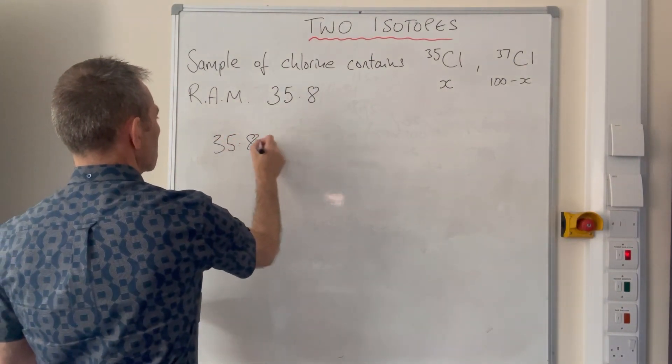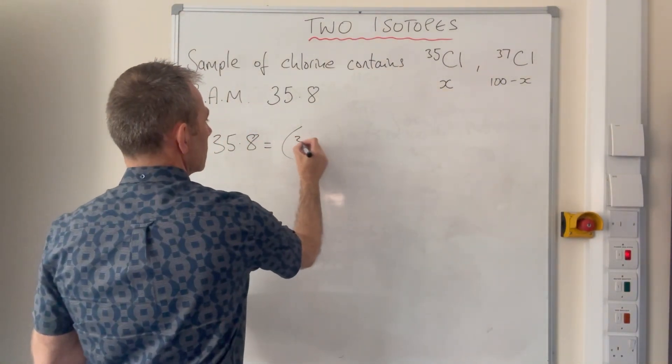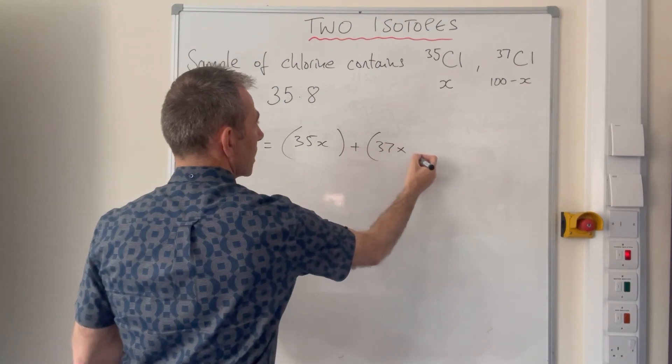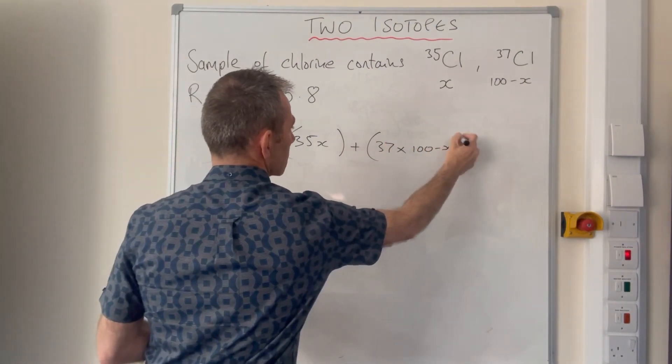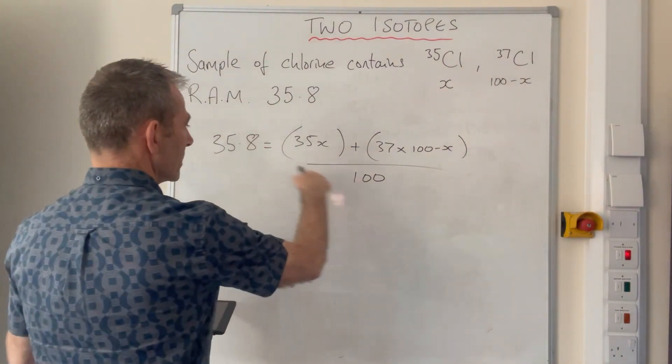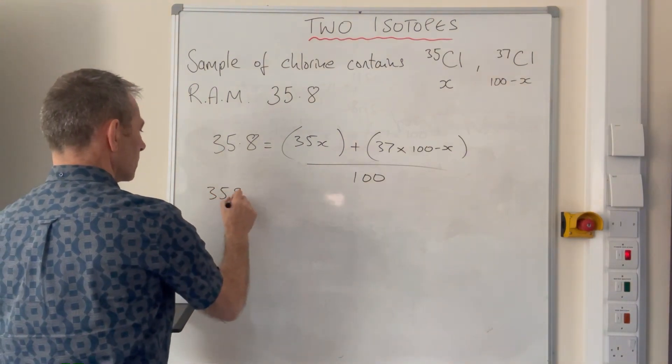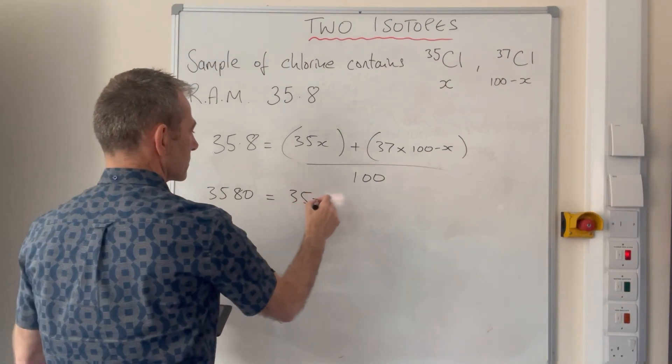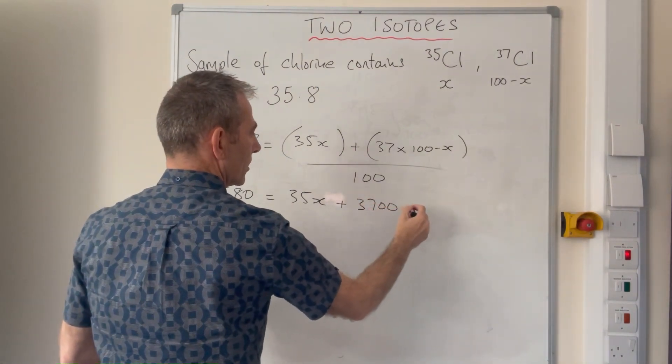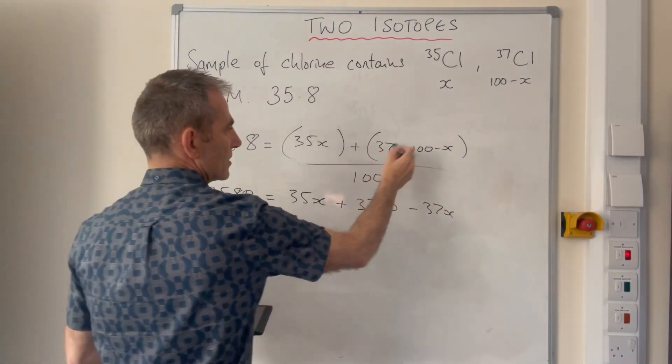Now we've established that, we'll put it into the regular formula for calculating relative atomic mass, but we know the relative atomic mass is 35.8. So 35.8 equals, remember it's isotopic mass times abundance then sum them, so it's going to be 35 times x, so 35x plus the other one is 37 times (100 minus x), and that's going to be divided by 100. So we'll tidy that up, take the 100 over here so it becomes 3580. Multiplying 35.8 by 100, 3580 equals 35x plus 37 times 100, so that's 3700 minus 37x.